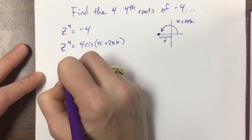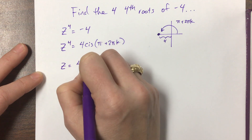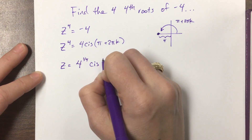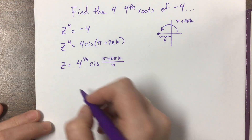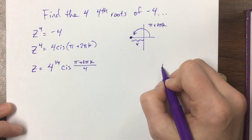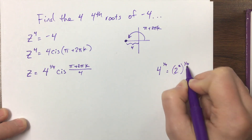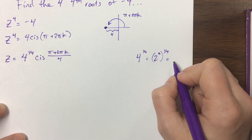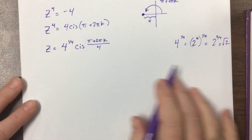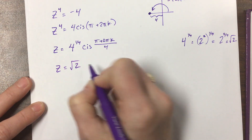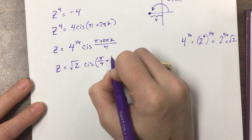So I want to raise this to the 1/4 power, so z is equal to 4 to the 1/4 times cis of (π + 2πk)/4. The 4 to the 1/4 would be the same as 2 squared to the 1/4, which is 2 to the 2/4, which is 2 to the 1/2, which is the square root of 2. So z equals the square root of 2 times cis(π/4 + πk/2).